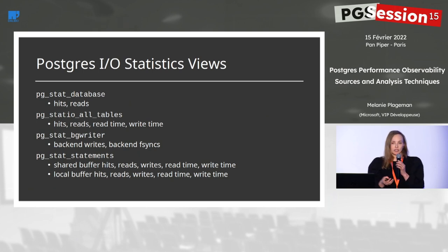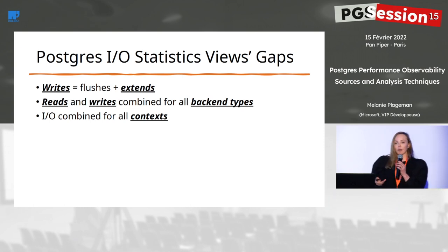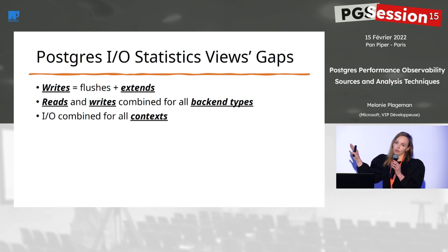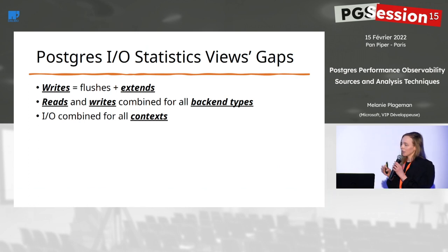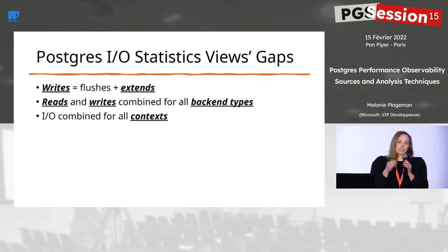You have pgstat_database, pgstat_io_all_tables, and pgstat_bgwriter — all had some information about IO. And of course, as other presentations have mentioned, the extension pg_stat_statements is often used by users to observe IO performance and think about tuning. There are some drawbacks and gaps in these existing IO statistics views. Writes are not well covered: most views don't include much information about writes, and when writes are included they combine flushes of dirty data and extends of a file.